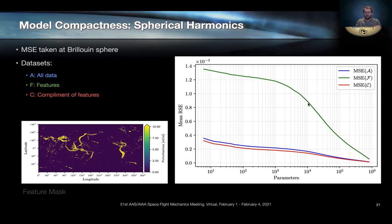The green curve is the error if I just mask out the features. So these are the dynamically important parts of the map. And the red curve is the complement of all the features. What's really interesting about this figure is that it suggests, before you even begin to converge on these dominant perturbations, you need over 10,000 coefficients in a spherical harmonic representation.